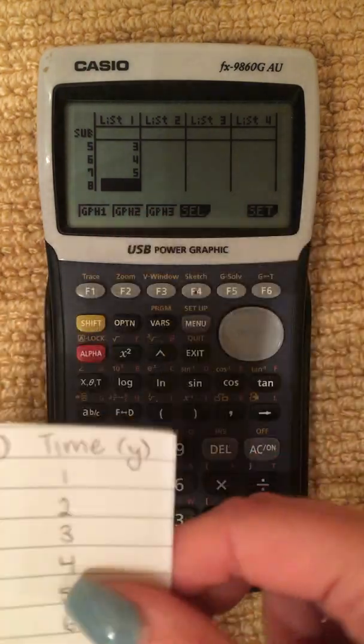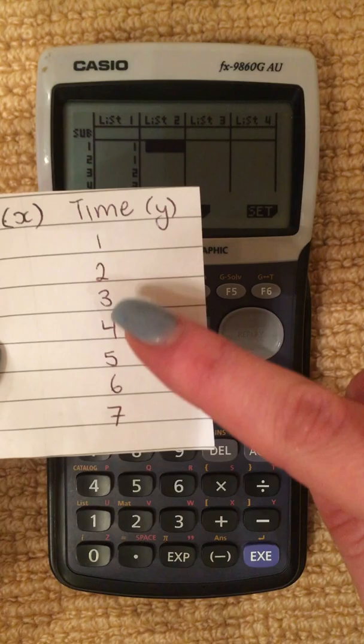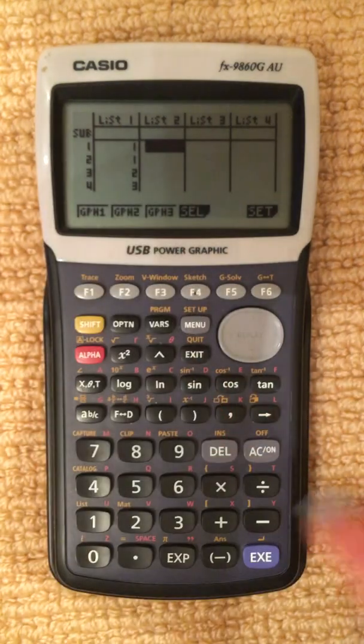Now we've finished with our X, let's put in our Y. So go across to the next list. We have 1, 2, 3, 4, 5, 6, 7. Easy.